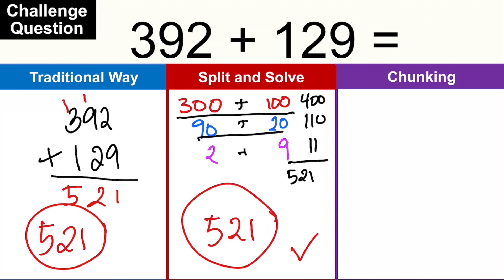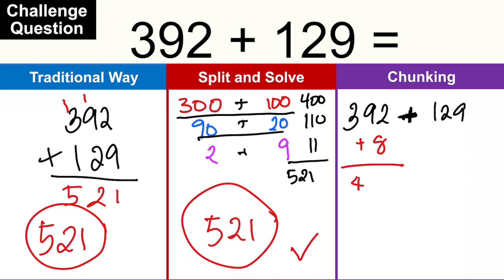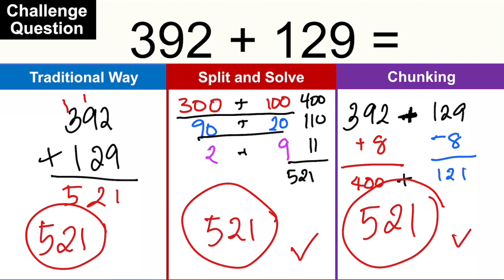Using chunking: we have 392 plus 129. As you can see, 392 is 8 away from 400. So I take 8 away from 129, giving me 121. Adding 400 plus 121 gives me 521 — still the same answer, no matter which method you use.